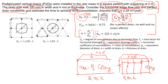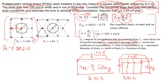Let's solve it and estimate the time to achieve 90% consolidation. We start with a square pattern and spacing of 2 meters. In a square pattern, the equivalent drainage path D_e equals 1.128 times the spacing, which is 2 meters. That gives us D_e = 2.256 meters.